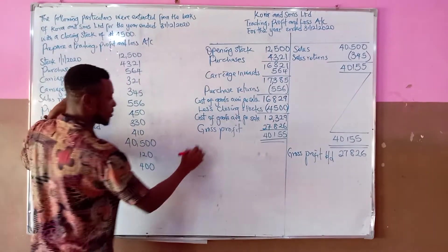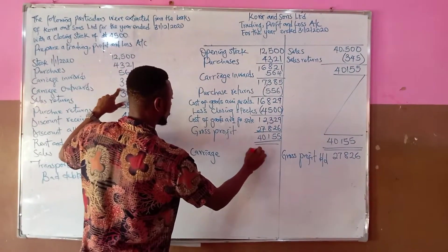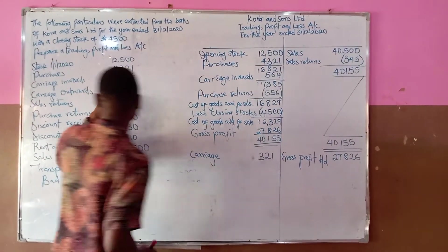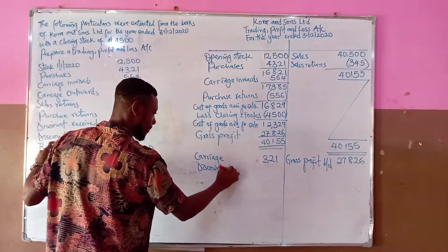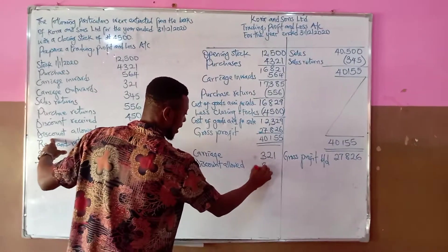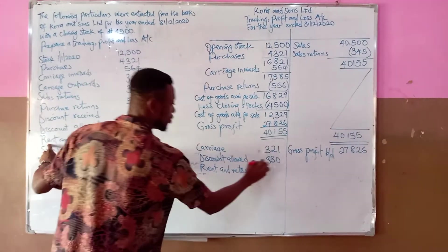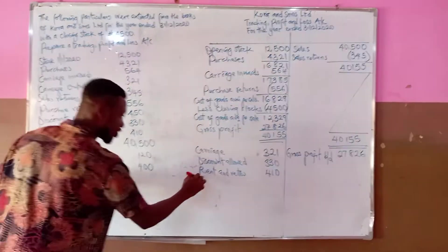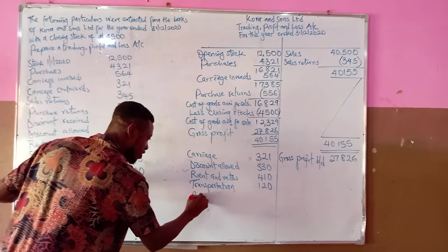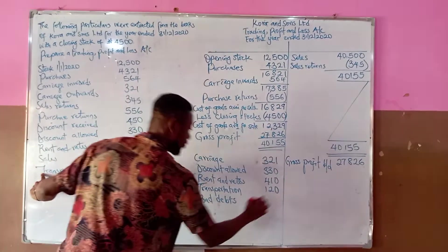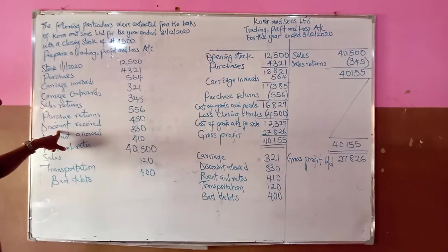Under the profit and loss account, all expenses incurred during the year are recorded on the debit side. These include: carriage outwards 321 (cost of delivering goods to customers), discount allowed 330, rent and rates 410, transportation 120, and bad debts (irrecoverable debts) 400.